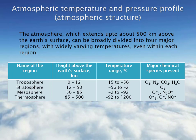You can see this table which is showing height above the earth's surface in kilometers of each of the layer of atmosphere, also the temperature range in celsius and the major chemical species present in it. When we talk about troposphere, it is from 0 to 12 kilometers, its temperature range is 15 to minus 56 degrees celsius, and the major chemical species present in this layer are oxygen, nitrogen, carbon dioxide and water vapors.